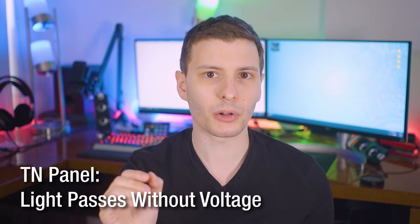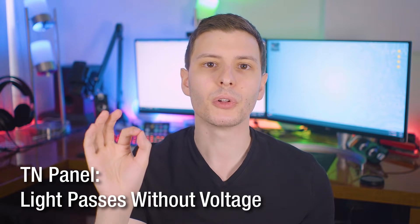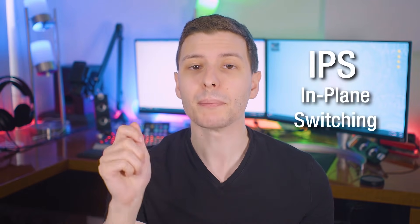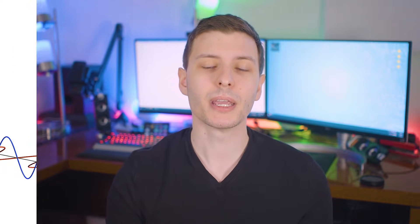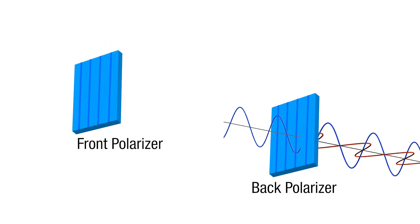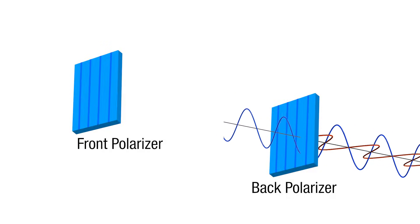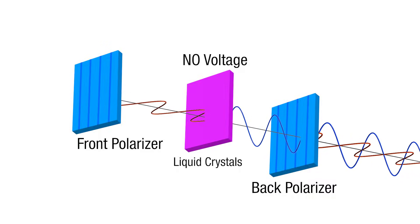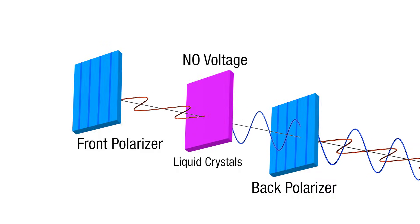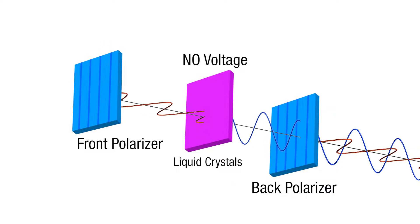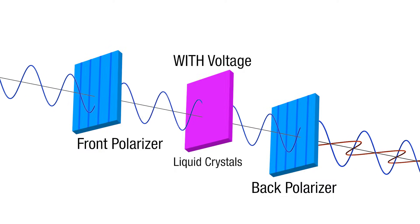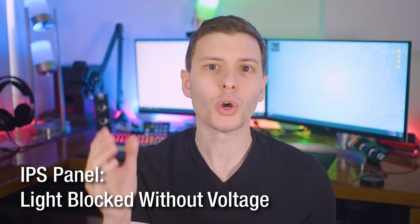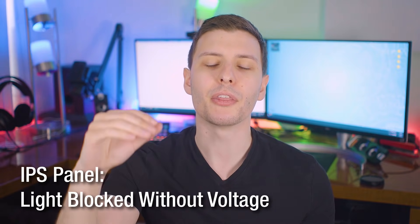One main takeaway to remember is that for TN panels, the default state of a pixel is to be on, and you have to actively apply voltage to turn that pixel off. With IPS type LCD panels it's the opposite — the second polarizing filter is oriented the same way as the first rather than 90 degrees out. The liquid crystals still bend light by default when no voltage is applied, meaning that by default, with no voltage, the pixel is blocked and not showing. Voltage must be applied to straighten the crystal, which then allows light through the second polarizing filter.